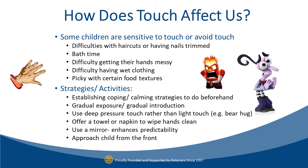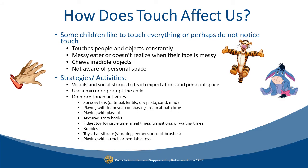For children under-sensitive to touch — Tigger or Eeyore — they might be touching people and objects constantly, messy eaters who don't realize their face is messy, chewing inedible objects, and not aware of personal space. They have a big cup looking for more input. Strategies include visuals and social stories to teach expectations around personal space, using a mirror to prompt the child, and including more touch activities. Sensory bins with oatmeal, lentils, dry pasta, sand, mud, foam soap or shaving cream at bath time, play-doh, textured storybooks, fidget toys for circle time or transitions, bubbles, vibrating toys, vibrating teethers or toothbrushes, or stretchy and bendable toys.